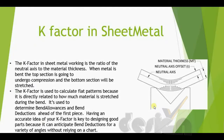The K-factor in sheet metal is the ratio of the neutral axis to the material thickness. When the material is bent, the top section undergoes compression and the bottom section undergoes stretching. The K-factor is used to calculate the flat pattern because it relates to how much material stretches during bending. It determines bend allowances and bend deductions, giving you an accurate design without relying on charts.